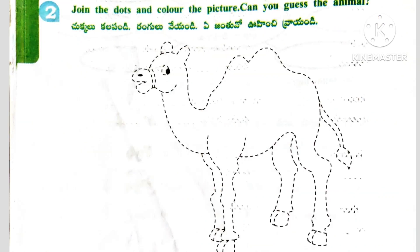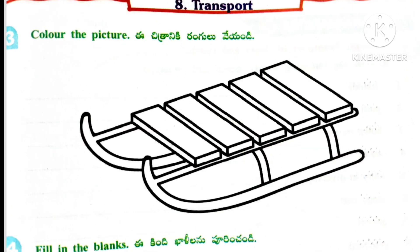2nd activity: Join the dots and color the picture. Can you guess the animal? This is Camel. Here we have to join the dots and color it. Next one: Color the picture. Here given one picture and we have to color it.